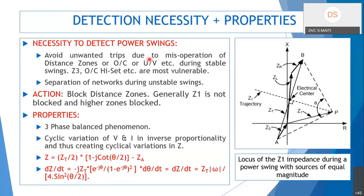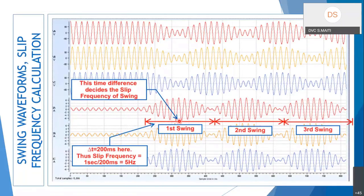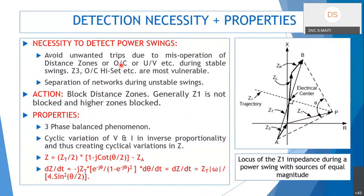We block our distance protection relay during swings. Misoperation can occur in distance zones, but also in overcurrent — as the current increases very high during a swing, instantaneous overcurrent protection might trip. Undervoltage protection may also get activated during a power swing. Zone 3, overcurrent high-set, etc., are the most vulnerable protections that might trip due to a power swing, which we don't want.